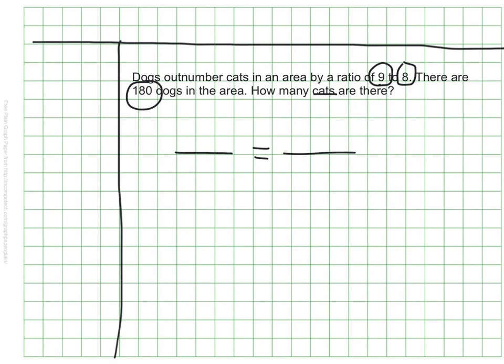What's different here from what we've done recently is that we're not finding a unit rate. We're not trying to find out when one of the numbers is 1. We're just trying to scale this and make sure that our ratio is equivalent as we scale up or down.